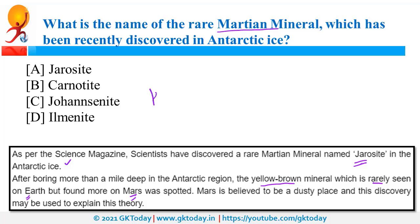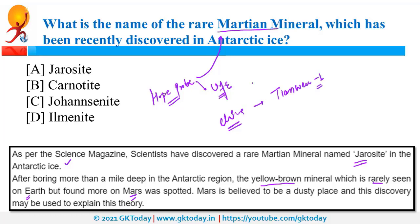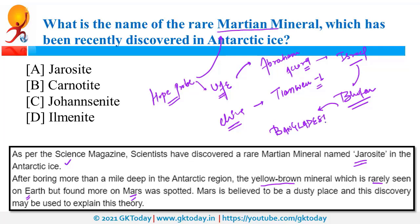Recently the Hope Probe was also in news — it is a Mars mission by UAE, that is the United Arab Emirates. China's first independent mission to Mars, Tianwen-1, was also in news. UAE was also in news because of the Abraham Accord, under which USA played a key role in the normalization of ties between UAE and Israel. Recently Bhutan also normalized ties with Israel.